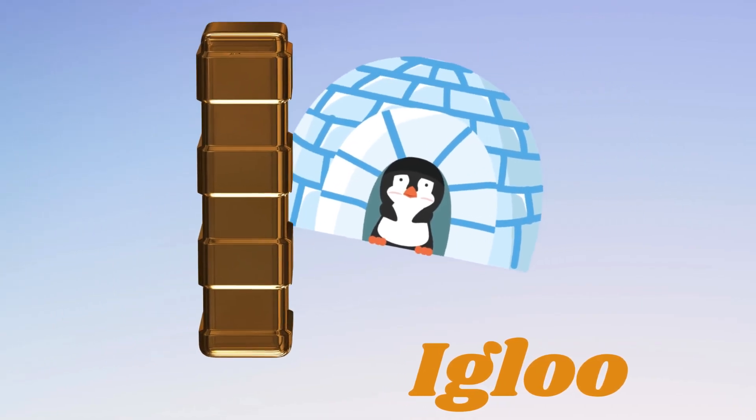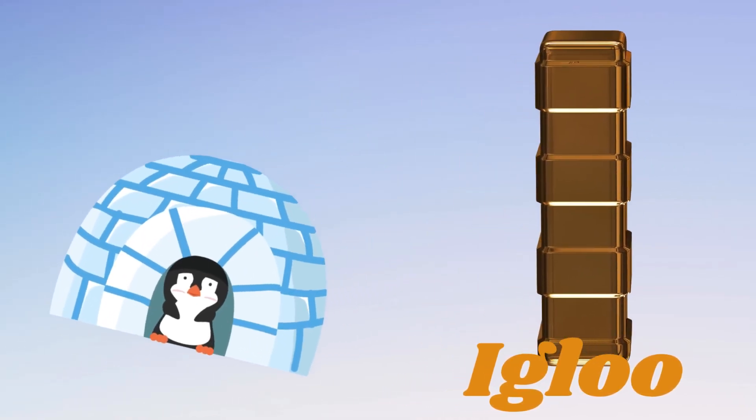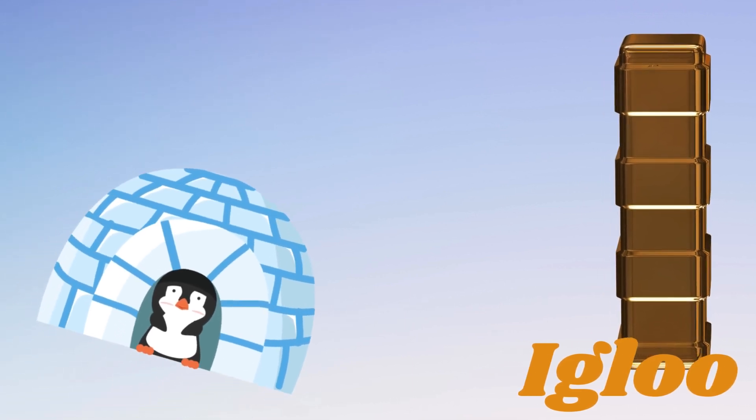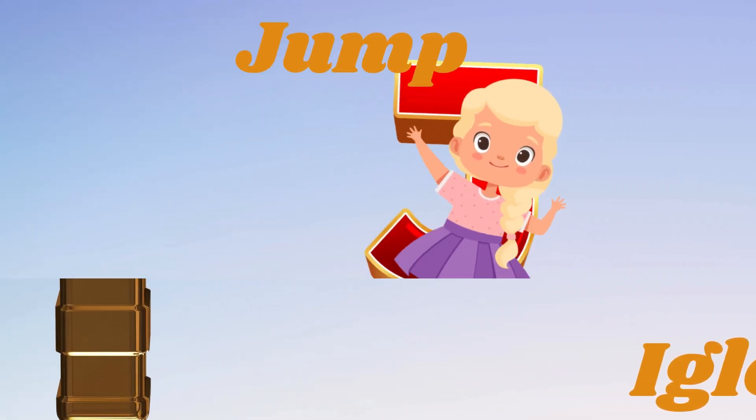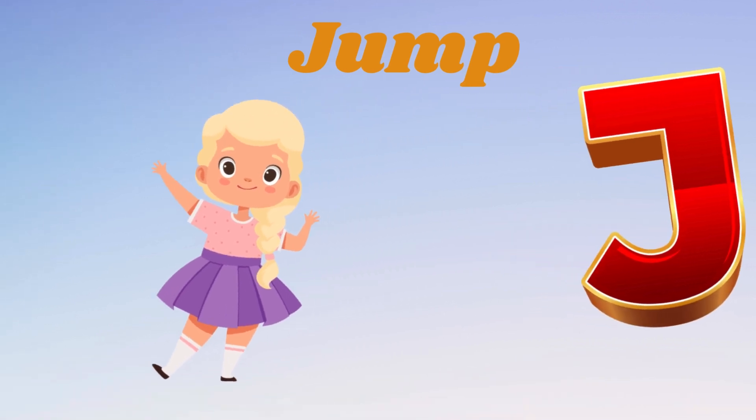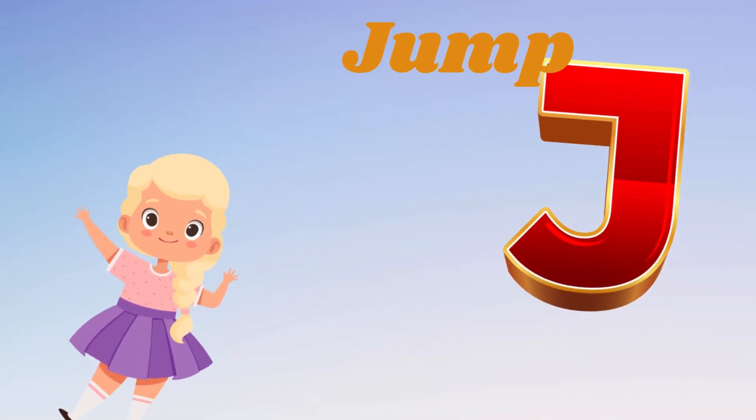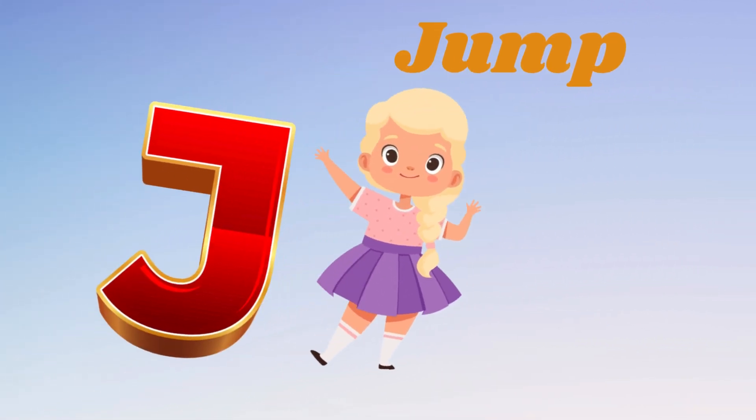I is for igloo, i-i-igloo. J is for jump, j-j-jump.